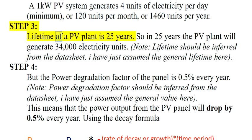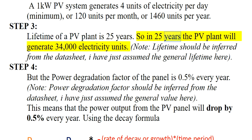Step 3: The lifetime of a PV plant is 25 years. So in 25 years, the PV plant will generate 34,000 electricity units.